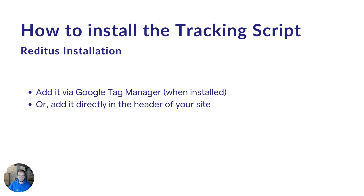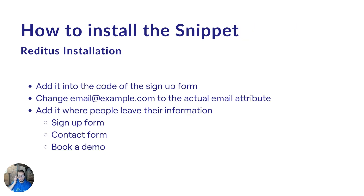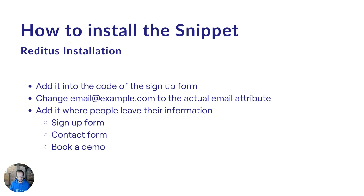For the conversion snippet: it's going to be fired when somebody does a successful form submission. It has to be implemented into the actual code of the sign-up form — it's just one line of code. Where it says email@example.com, make sure you change it to the actual email attribute, so it captures the email people fill out when they sign up. Most common is the sign-up form, but if you have a contact form or book-a-demo form, add it there as well. An easy way to check where you need to add it is to go to your website, identify the main calls to action, and make sure you capture those.